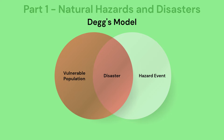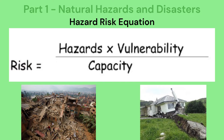You may notice how Degg's model looks similar to a Venn diagram, and you should remember this model as you may be asked about it or asked to give an example of a disaster model. Continuing with this theory of disasters, we can now see the hazard-risk equation. It means that the geophysical event that poses a threat is multiplied by the social group that is at risk, making the hazard worse by vulnerability. However, this equation illustrates how the capacity to cope can reduce the risk posed by the hazard. Capacity is the country's ability to withstand and manage the hazard event.